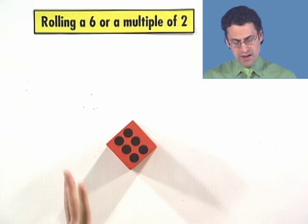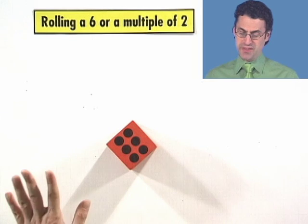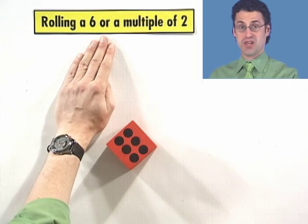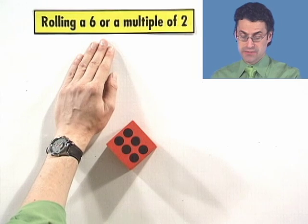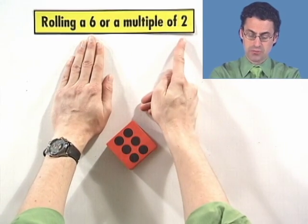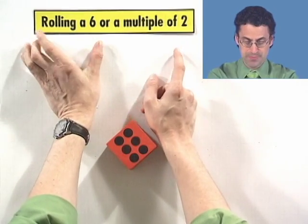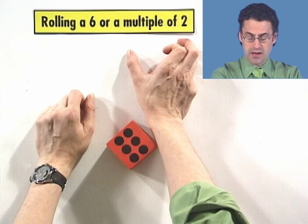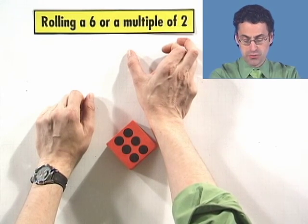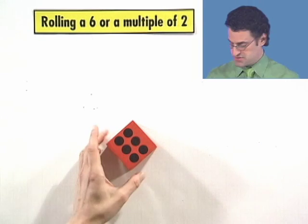So how do we find out the probability of rolling a 6 or a multiple of 2? When you think of this naively, you say, oh, or, maybe we should add. But these are not mutually exclusive events because by rolling a 6, I'm also simultaneously rolling a multiple of 2. So if I find the probability of rolling a 6 and add it to the probability of rolling a multiple of 2, that's going to be too large because there was overlap. So how do we deal with that?